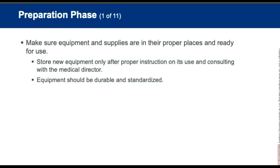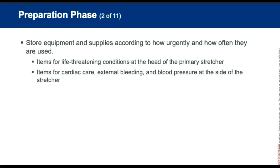The first phase is preparation, when we make sure all equipment and supplies are in their proper places and ready for use. New equipment should be placed on the ambulance only after proper instruction on its use and consulting with the medical director. Equipment and supplies should be durable and standardized. Store equipment according to how urgently and how often it is used. Items needed for life-threatening conditions should be within easy reach, sometimes at the head of the stretcher. Items for cardiac arrest, external bleeding, and blood pressure monitoring go at the sides of the stretcher.